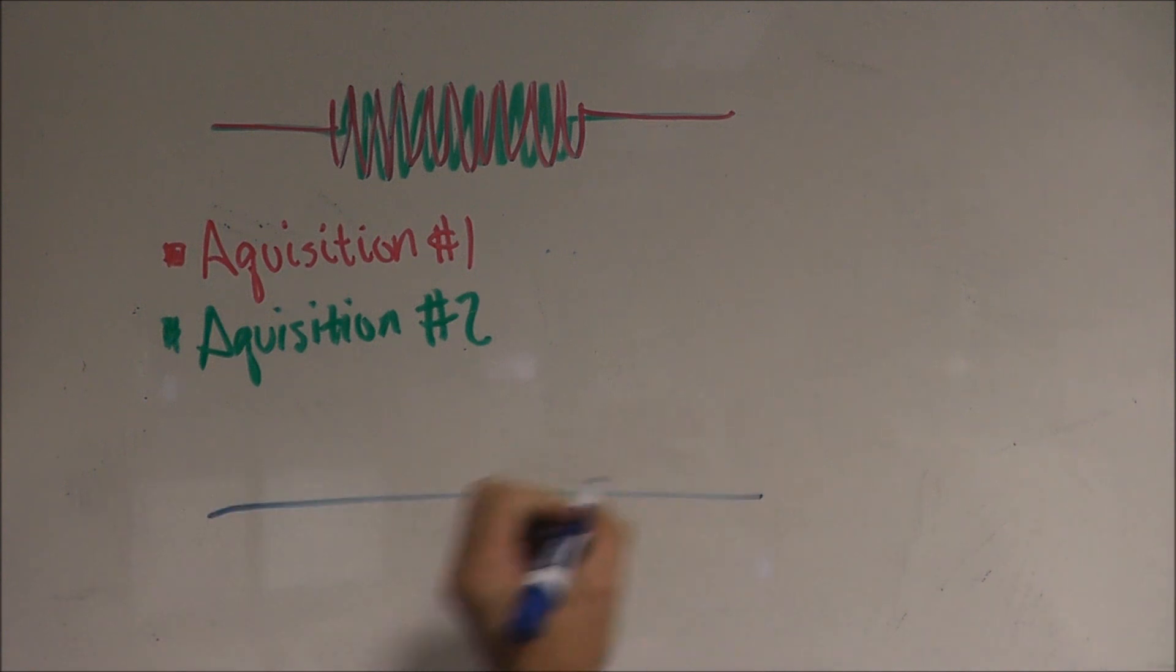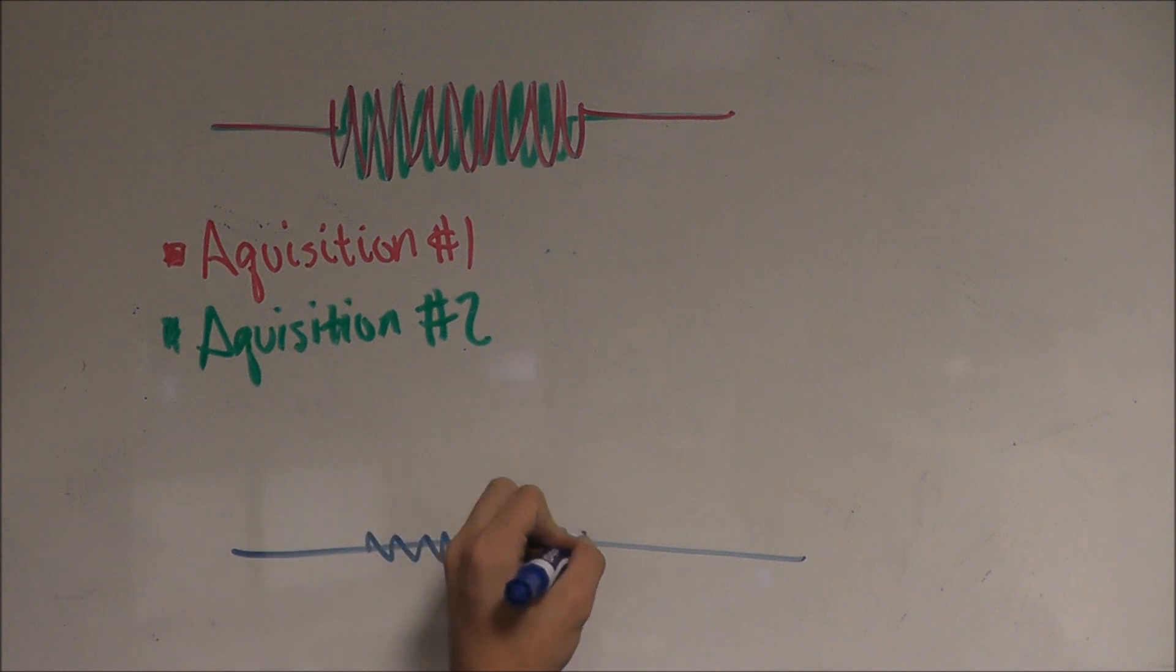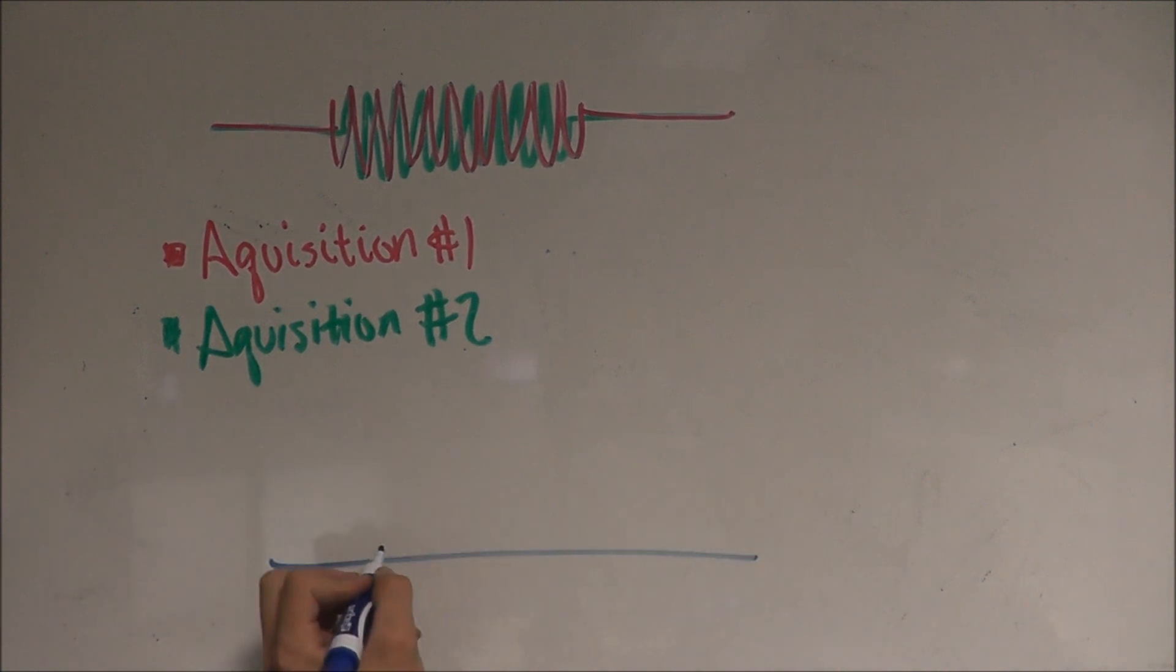And we can see if we average two acquisitions it reduces the noise and we would get something along the lines of this. And if we averaged four acquisitions it would reduce the noise even further and we would see something along the lines of this. And as you could imagine this trend will continue as we increase the sample size until the noise is negligible.